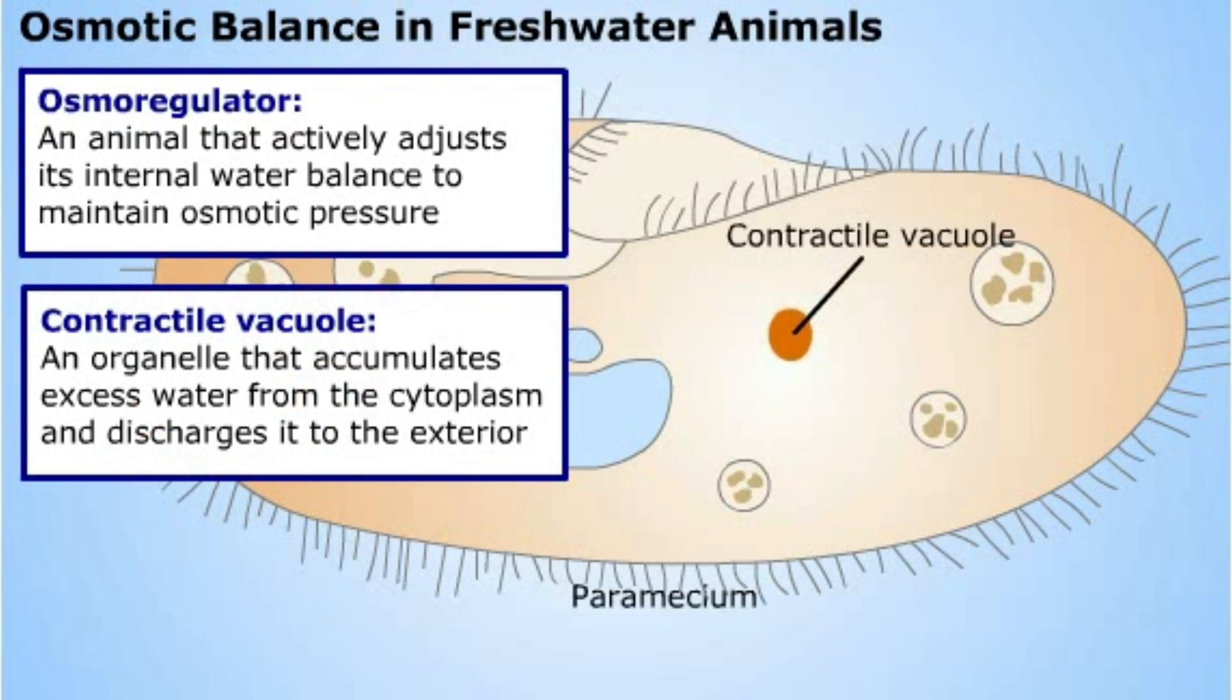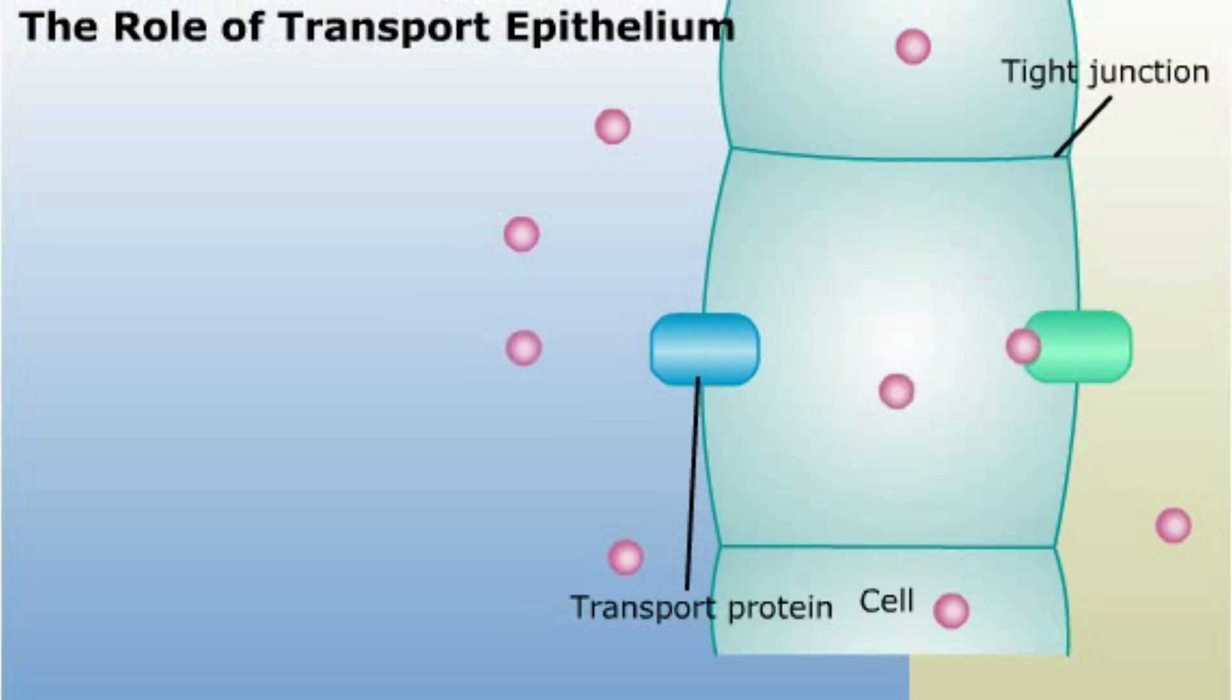Marine protists, which are osmoconformers, don't usually need or possess contractile vacuoles. Land animals have the opposite problem to freshwater protists. As we'll see, they need to prevent water loss from their cells.